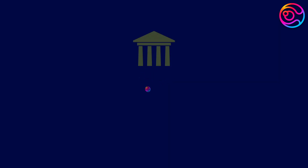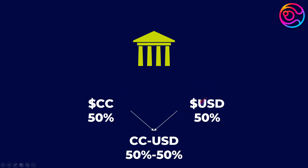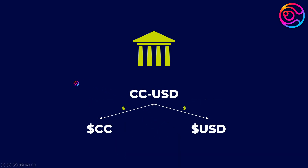Imagine that you are a foreign bank and that your money was equally divided 50-50 between your country's currency, let's call it CC, and US dollars. In order to allow other people to exchange between your currency and US dollars, you decide to combine these two currencies together into one pool. You can then charge people a small fee to use your pool to swap back and forth between your country's currency and US dollars.